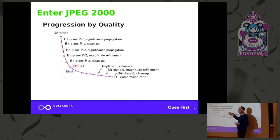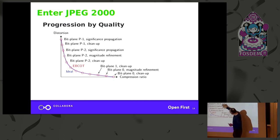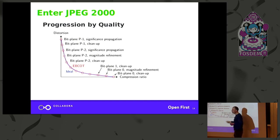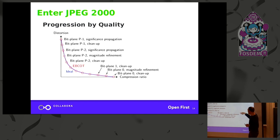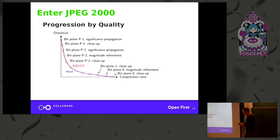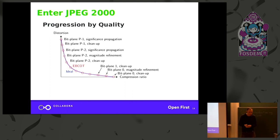It's very computationally expensive, but we create many different passes for that image that we can package up into different quality layers — very fine-grained quality layers. For an 8-bit image you could have 23 different passes, and each pass can be packaged into different quality layers using the EBCOT algorithm for determining these quality layers. That was a big innovation.